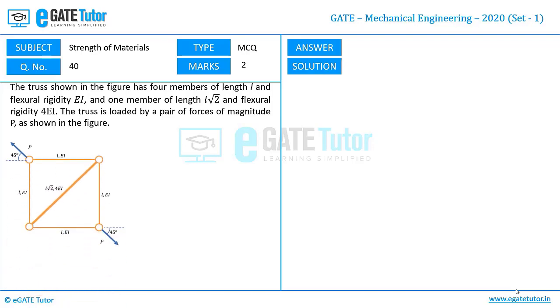This is the truss configuration where load P is acting at an angle 45 degrees in the opposite ends of the truss. Let us see what he is asking. The smallest value of P at which any of the truss members will buckle is.